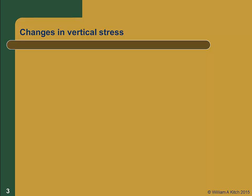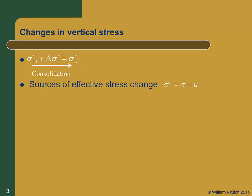We learned earlier that consolidation settlement is caused by a change in effective stress. The soil will start out at some initial effective vertical stress, sigma prime z0. A change in vertical stress, delta sigma z prime, will be caused by some process, leading to a final vertical effective stress of sigma prime zf. The change in effective stress generates the consolidation process. We will compute the initial vertical effective stress, sigma prime z0, using our standard techniques for computing geostatic stress. But how we compute delta sigma z prime will depend on the source of the effective stress change.